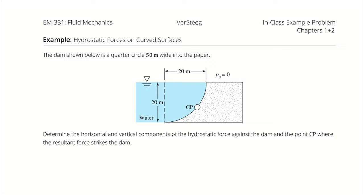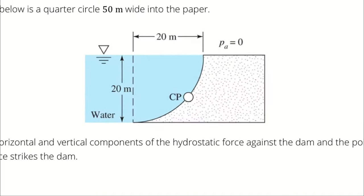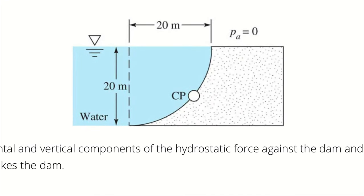The dam shown below is a quarter circle, 50 meters wide into the paper. Determine the horizontal and vertical components of the hydrostatic force against the dam and the point CP where the resultant force strikes the dam. We can't use the same analysis we have been using — we don't have a good way of describing the angle at which the surface lies relative to the surface of the fluid.